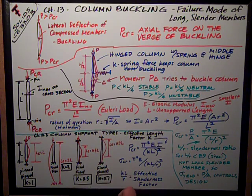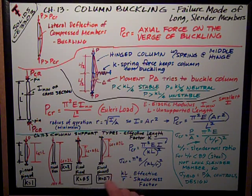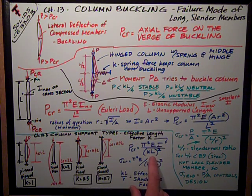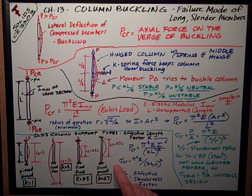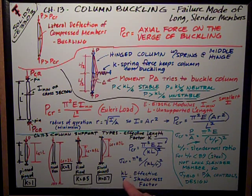For pinned at the top and fixed at the bottom — or vice versa — the fixity still provides some stiffness, reducing its effective length to 0.7L, so its K factor is 0.7. Using these K values, we modify Euler's load to P-critical equals pi squared times E times I over the quantity KL squared, and the critical axial stress for buckling is pi squared times E over the quantity KL over r, squared. KL over r is referred to as the effective slenderness ratio.